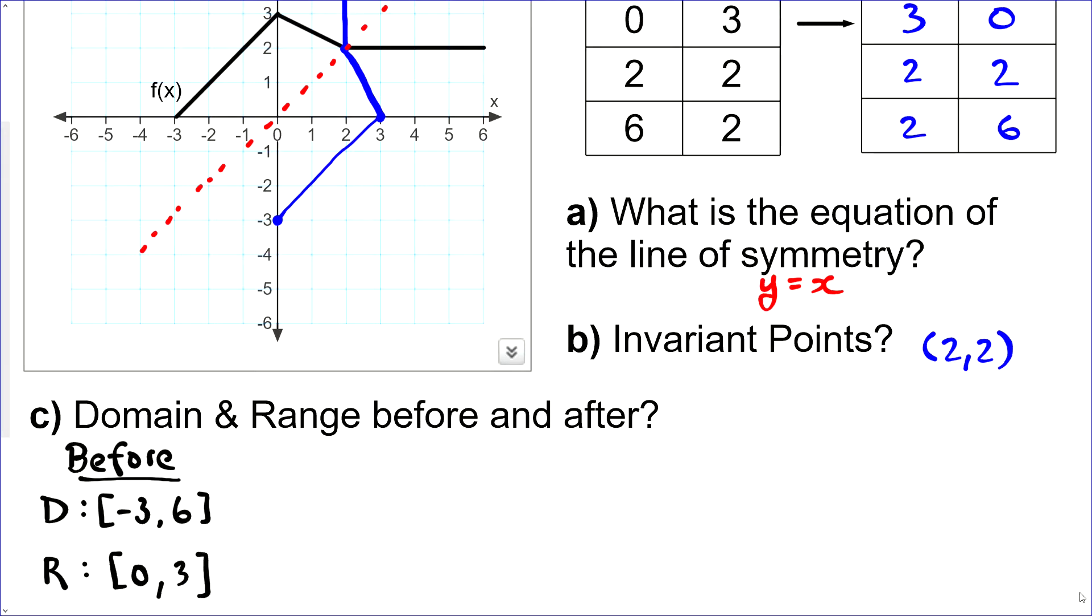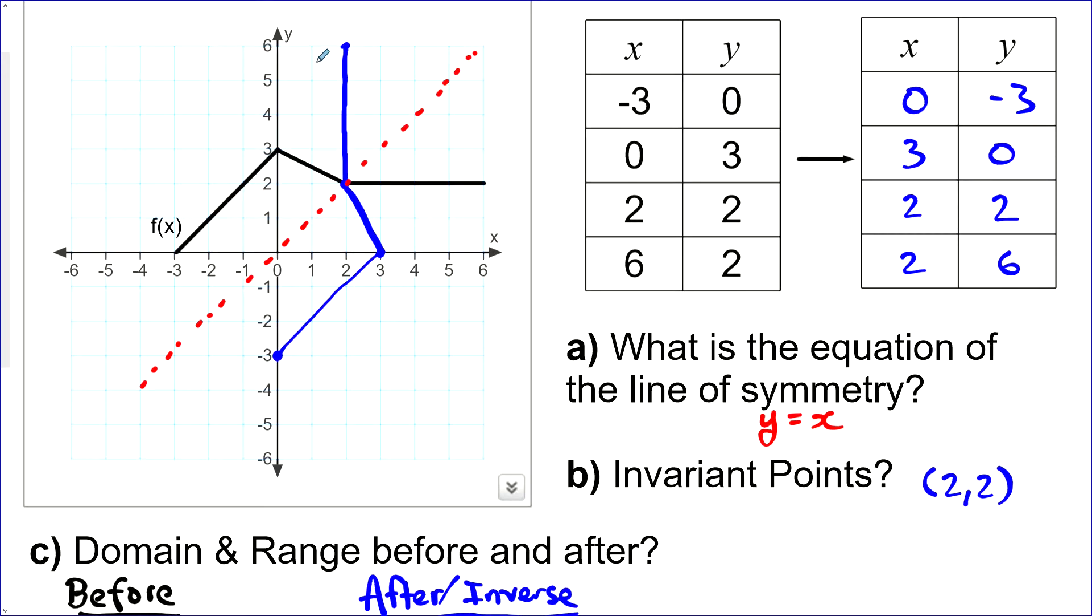Now let's switch to blue. And we'll do the domain and range. So let's say after or inverse here. And let's do the domain. And now it goes from 0 to 3. And the range here goes from negative 3 to a maximum of 6.